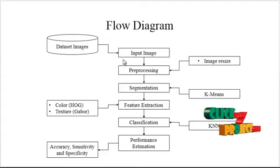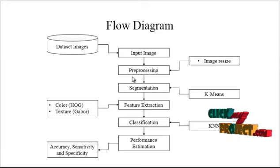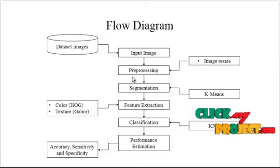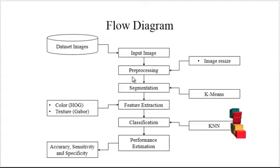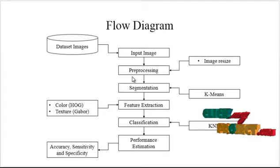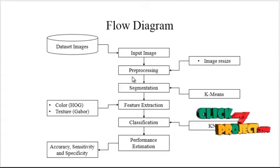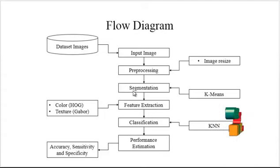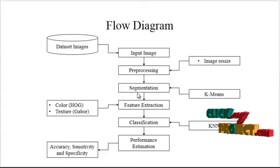After selecting the input, we move to the second stage — preprocessing. In preprocessing, image resizing is used to resize the image to the correct aspect ratio. After resizing, we move to the third stage, which is image segmentation.